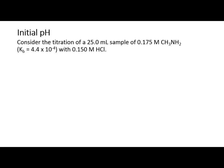Here's the basic question. I think this is problem 73 in the third edition of Tro. Consider the titration of a 25 mL sample of 0.175 molar methyl amine, here's the KB, with 0.150 molar HCl. So this is a weak base being titrated with a strong acid. First we're going to calculate the initial pH.